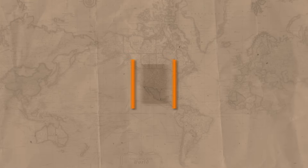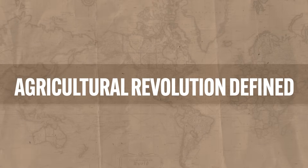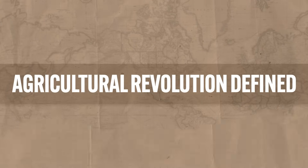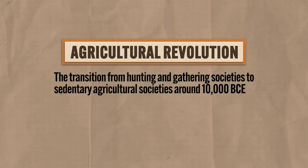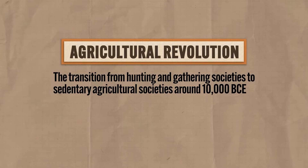As is our custom, let's begin by defining our terms. The agricultural revolution describes the transition from hunting and gathering societies to sedentary agricultural societies around 10,000 BCE. And the definition, which is supposed to help you understand the meaning of the word, also has lots of confusing words. So let's go a little further.